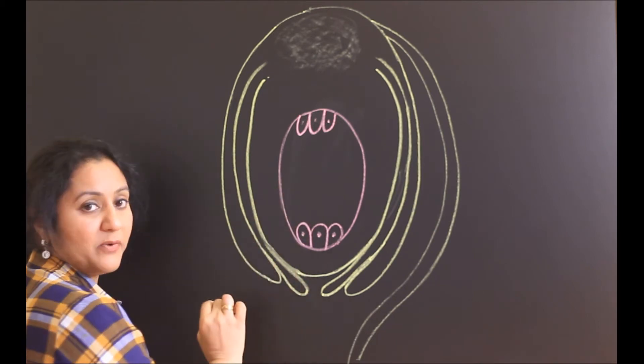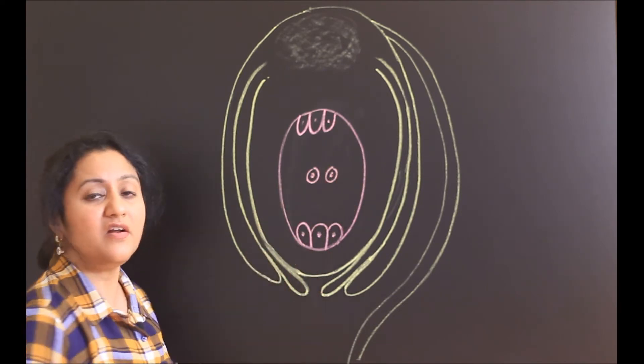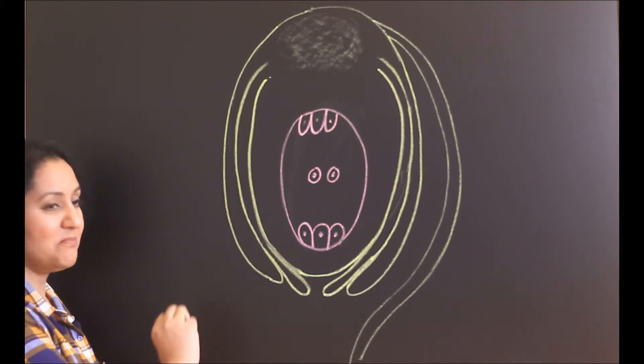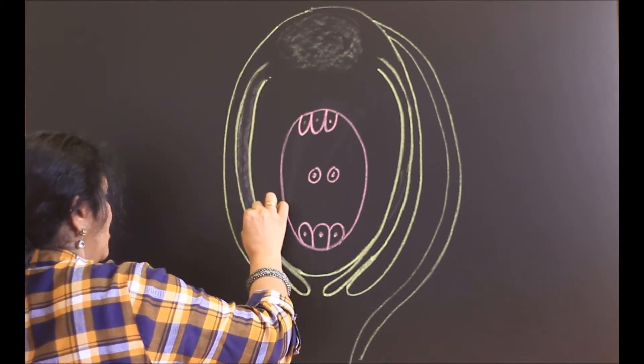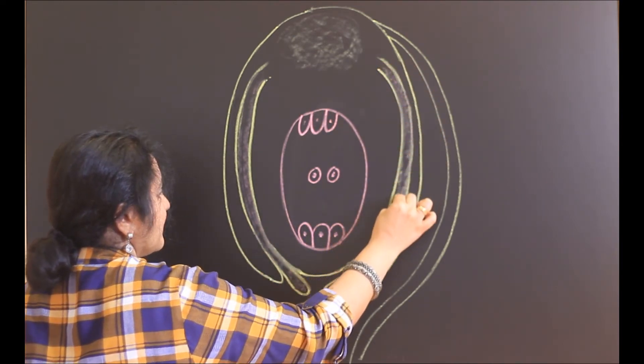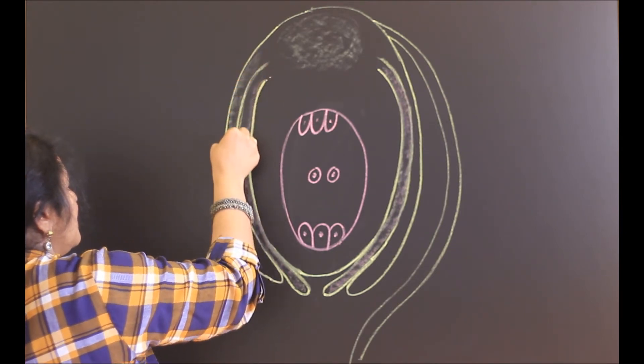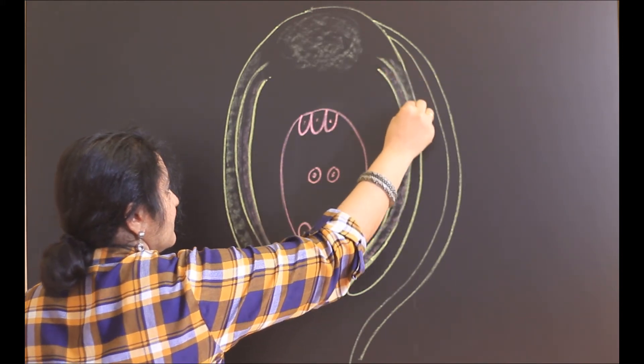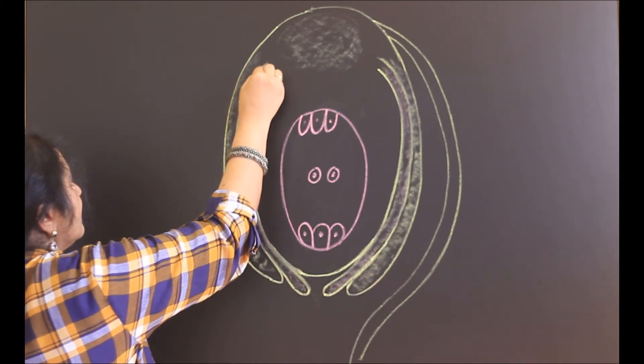What is there in the center of the embryo sac? There are two nuclei. They are called as the polar nuclei. Let us give some shading for these parts. You can use your pencil to do the shading. This is the inner integument. This is the outer integument. Make the lines clear and darker.